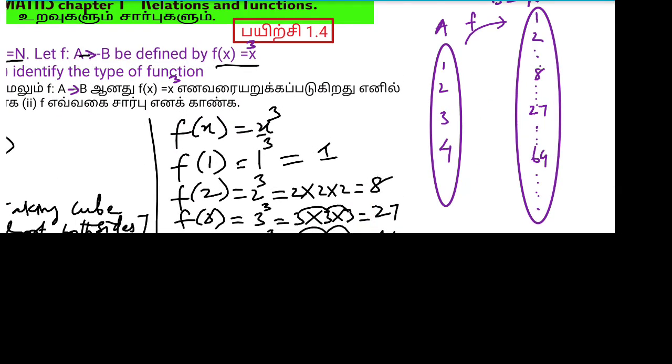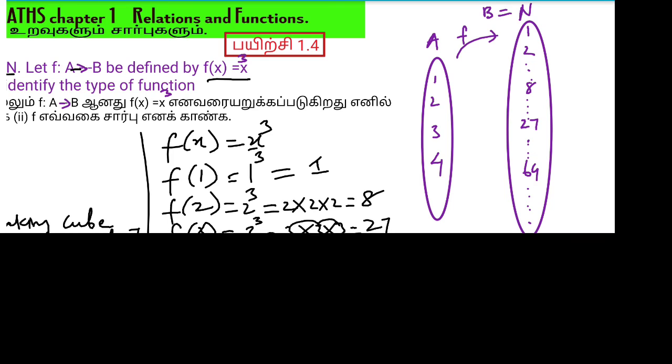This is the output value of 1, so this is the mapping. 2 is equal to 8, 3 is equal to 27, 4 is equal to 64.